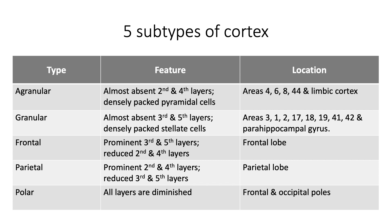The third type is the frontal cortex, which shows prominent 3rd and 5th layers and reduced thickness of 2nd and 4th layers — found in the frontal lobe. The fourth type, parietal cortex, shows prominent 2nd and 4th layers and reduced 3rd and 5th layers, meaning prominent granular cells and reduced pyramidal cells — found in the parietal lobe. The fifth type is the polar cortex, where all 6 layers are reduced, making it the thinnest type of cortex, found in the frontal and occipital poles.